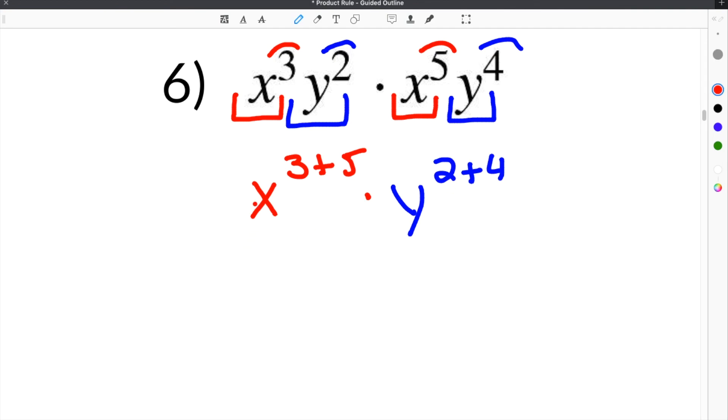Then, when you write your answer, you have x to the 3 plus 5th, and that's x to the 8th, and then y to the 2 plus 4, which is y to the 6th. That's going to be your final answer.